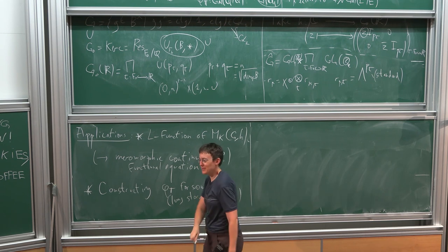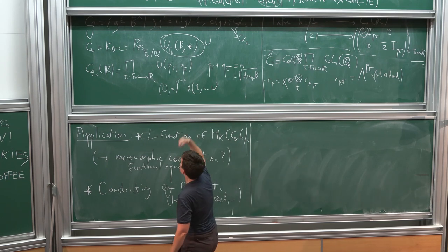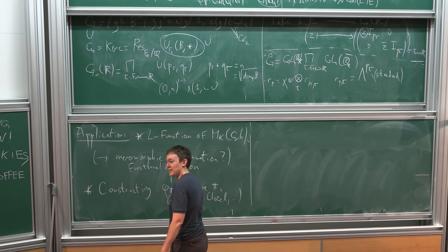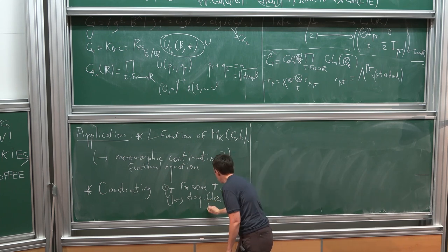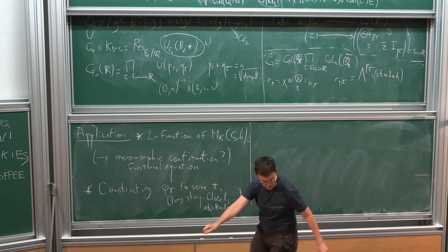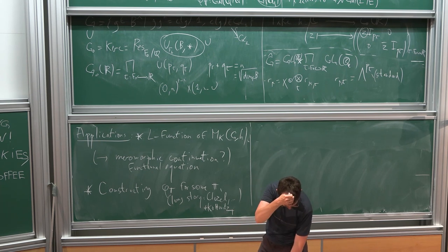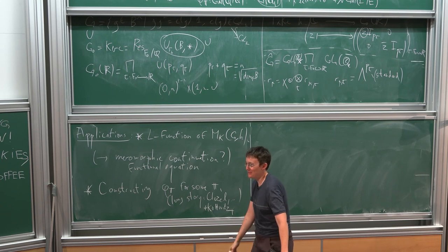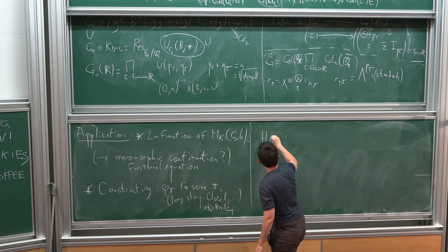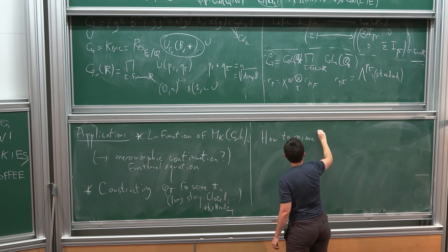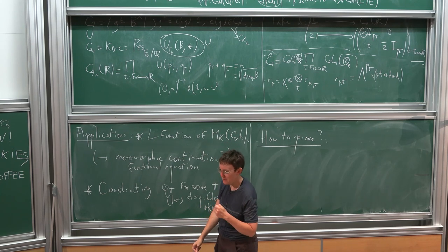The first guy who started that story is Clozel. Kottwitz proved his conjecture at an unramified place for simple Shimura varieties, and then Clozel used it to construct some cases of global Langlands. So it's Clozel building on Kottwitz. He dealt with various technical problems by just having lots of conditions in his theorems. I have a negative time to tell you how to prove it, but let me sketch the strategy.